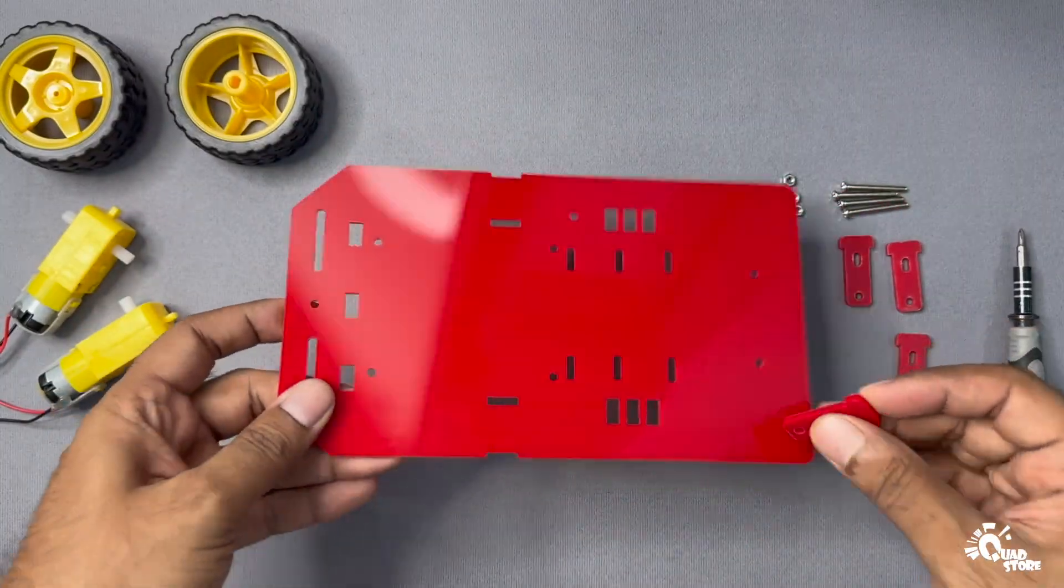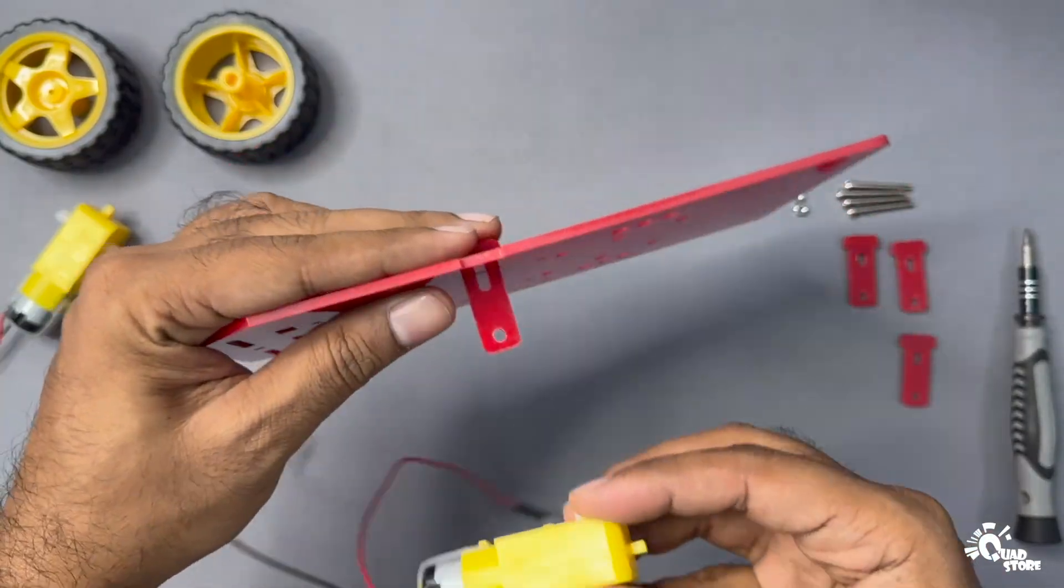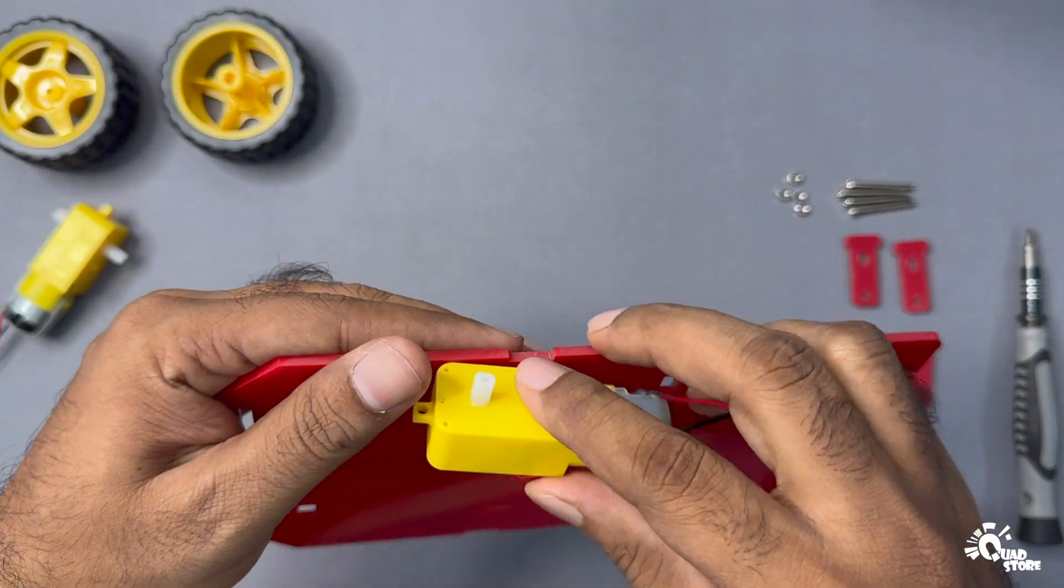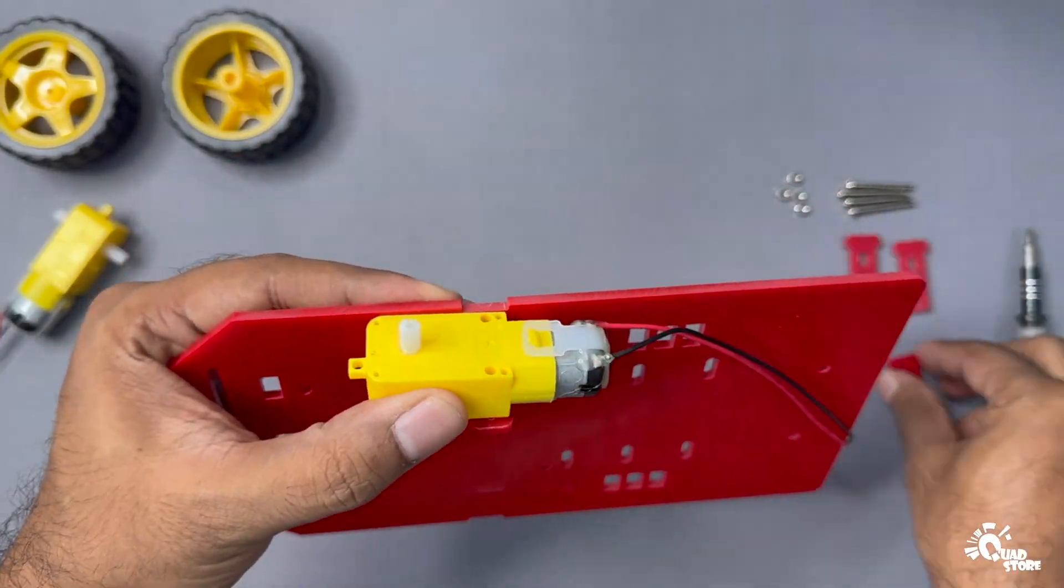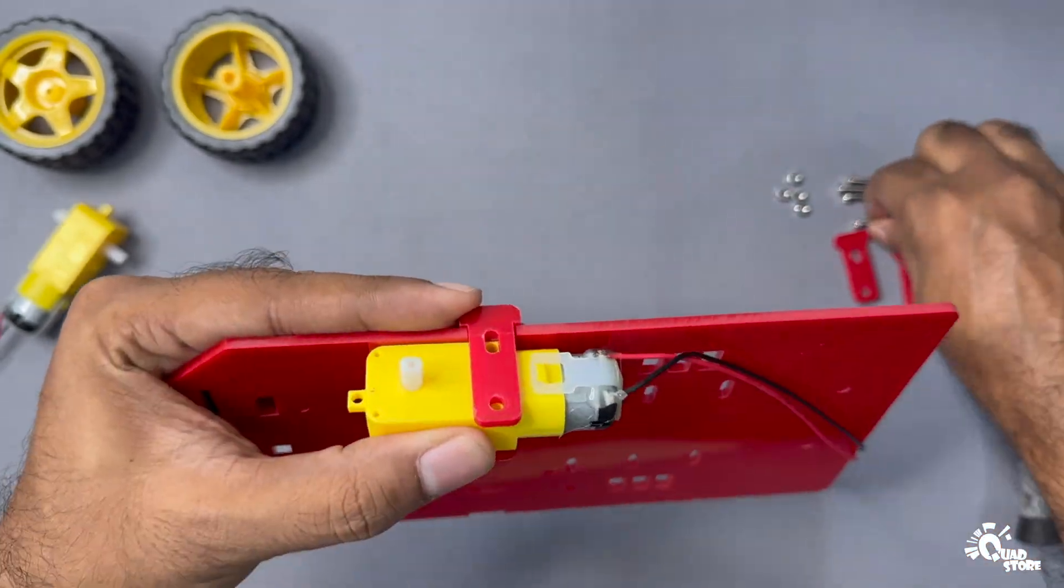Mount the first motor. Insert one motor mount into the chassis base as shown in the video. Place the motor in the center of the mount and then attach the second motor mount on the opposite side of the motor.